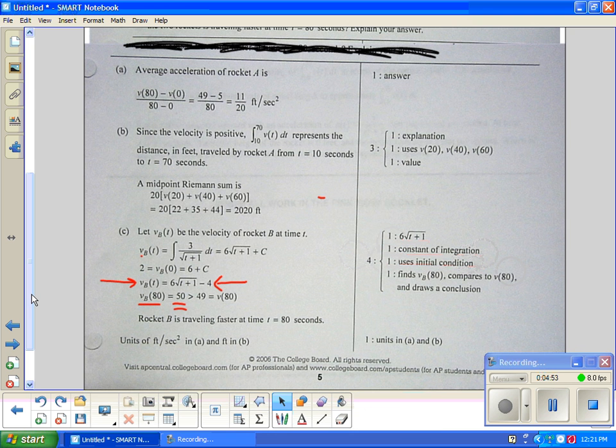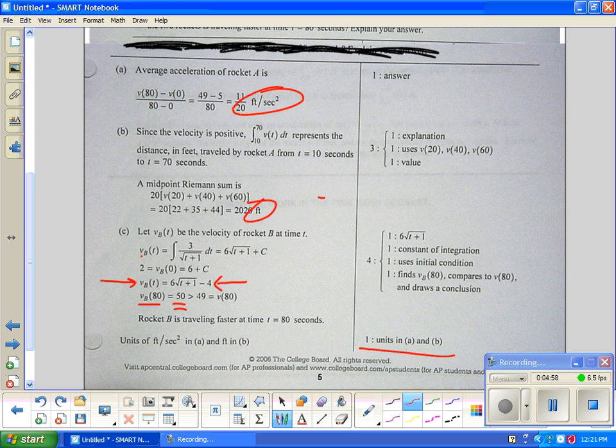Lastly, if you have right units in A and B, if you have feet and feet squared per second, that's where the last point is worth it.